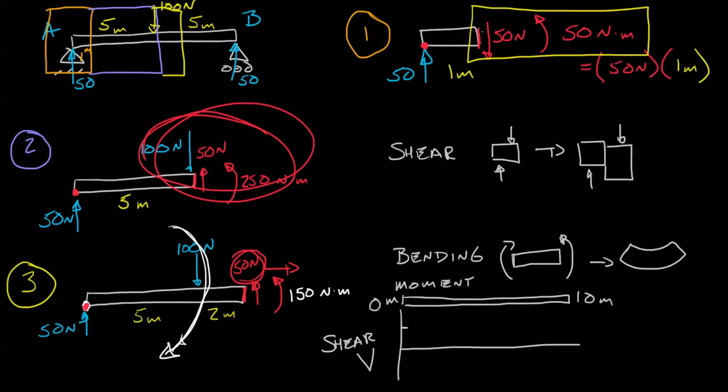The shear at this location won't change - it stays constant at positive 50 newtons all the way until we get to the middle. But then something special happens. Once we hit the center point, once we hit this 100 newtons down, the direction completely changes. Instead of positive 50, we draw negative 50.